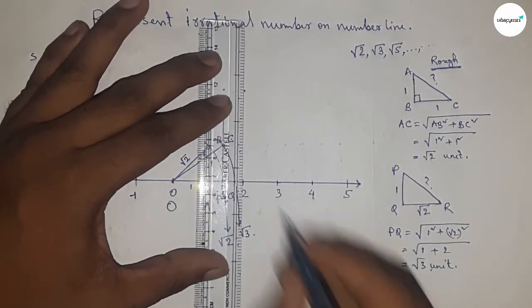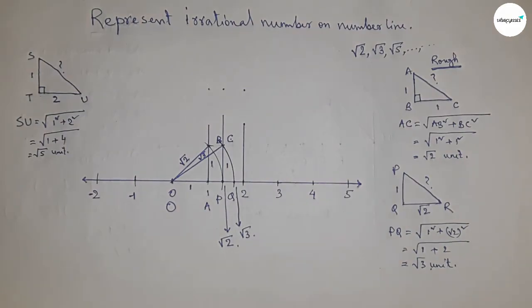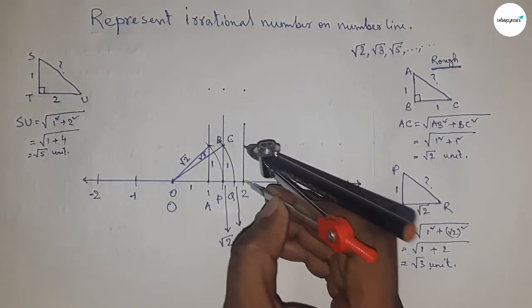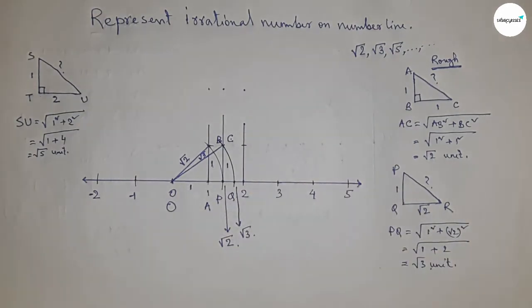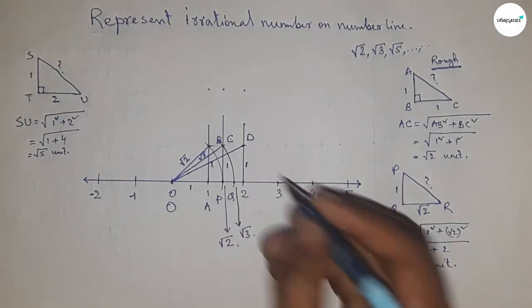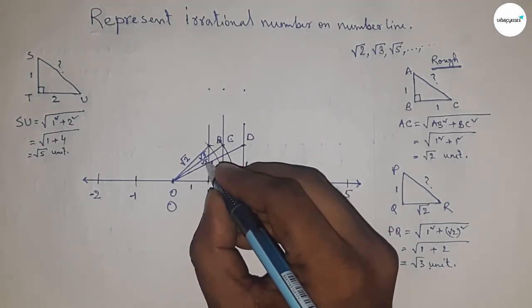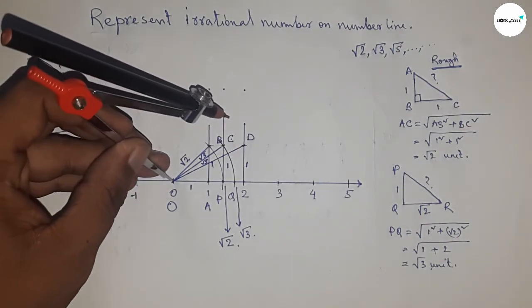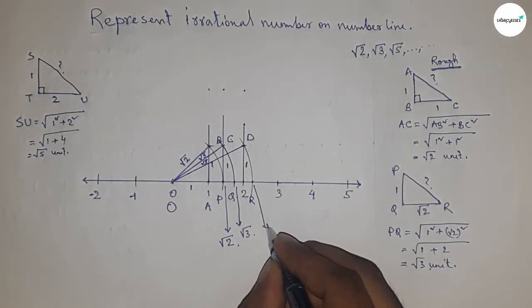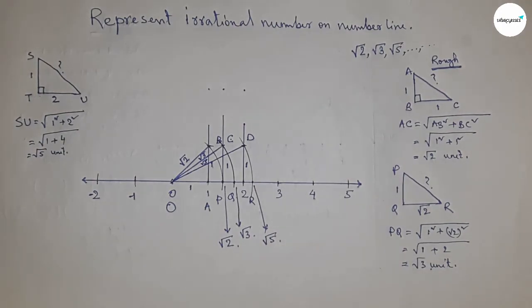Taking a length equal to one unit between any two numbers and marking point D. Join O and D — this is one unit length — and from this, OD is obviously root 5. Now take the length OD with a compass to draw an arc which meets the number line at point R. This is the representation of root 5 on the number line. By this method, we can represent all irrational numbers on the number line — such as root 6, root 7, root 8, root 9, and so on.